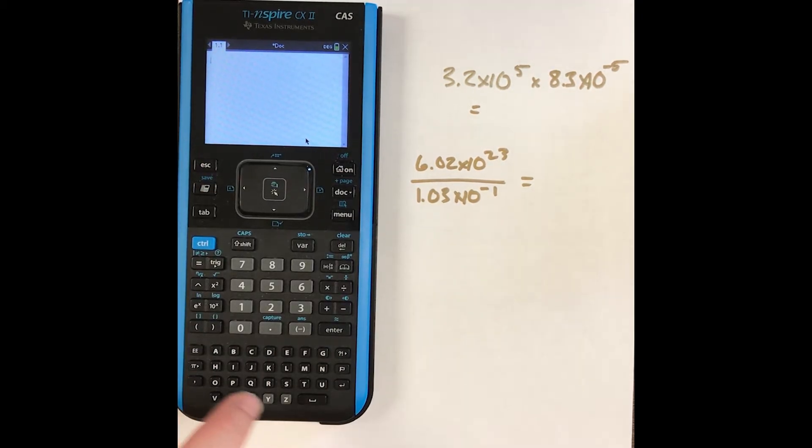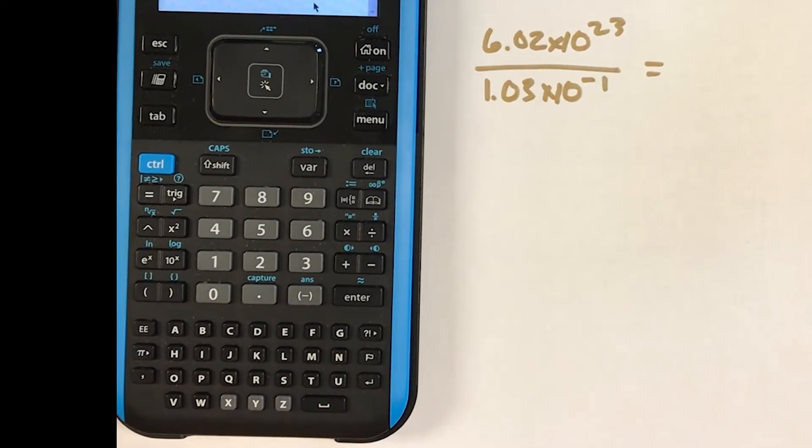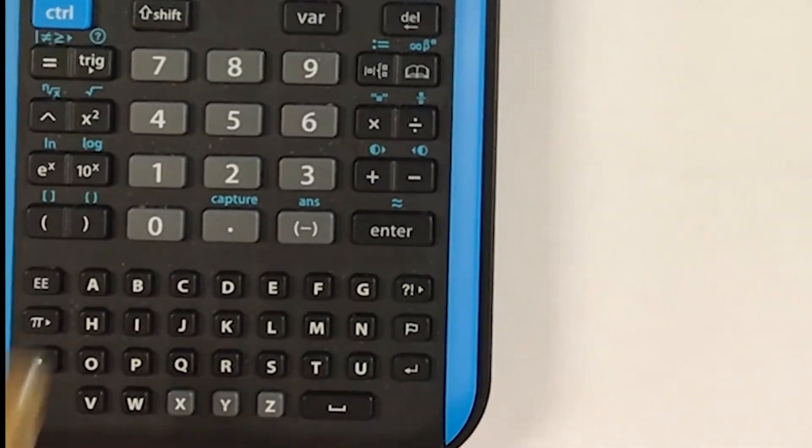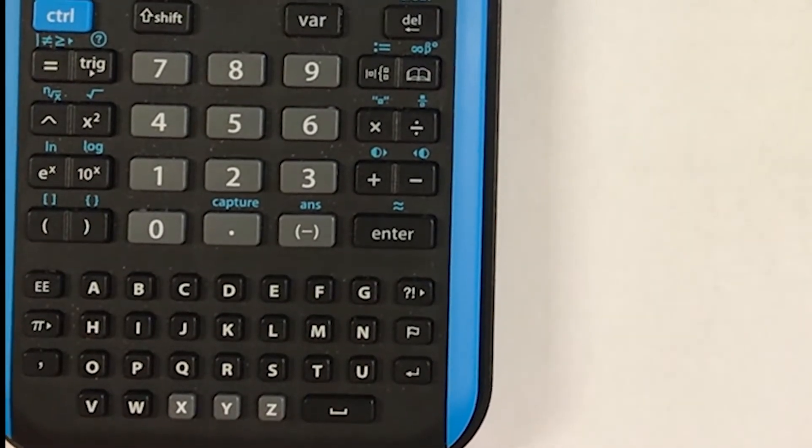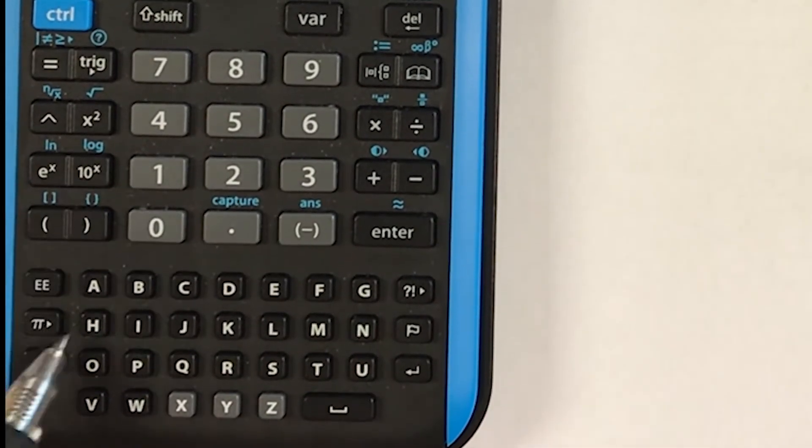And it's a really important thing. I'm going to type in the number 3.2. But a lot of people want to push this times 10 to the power button right here. You see this right here. And that is not correct. This times 10 to the power button is not what you want to push.